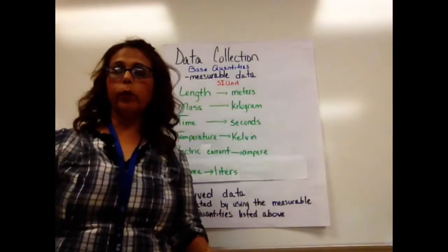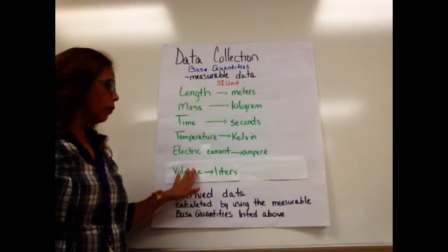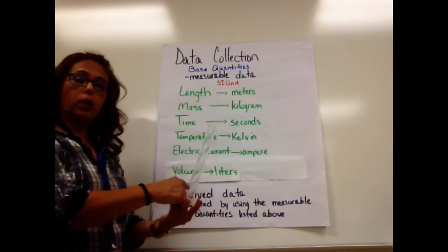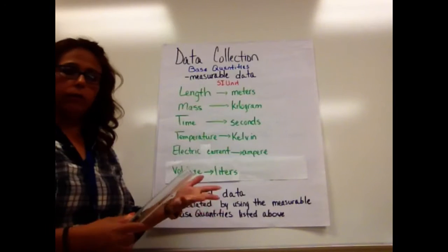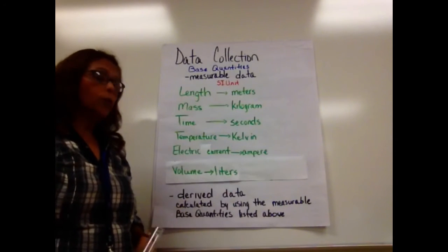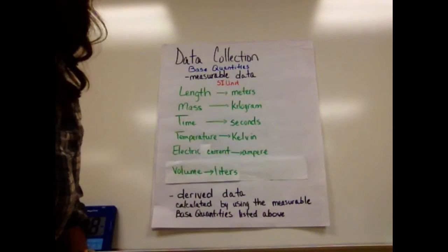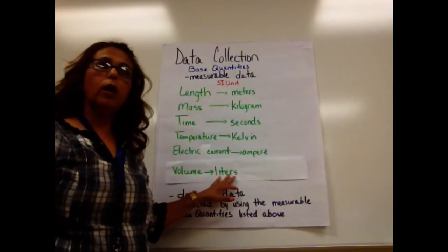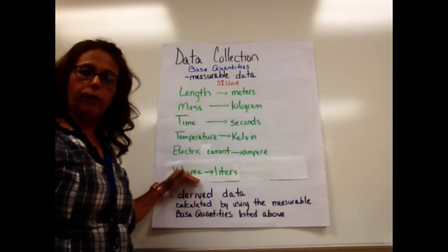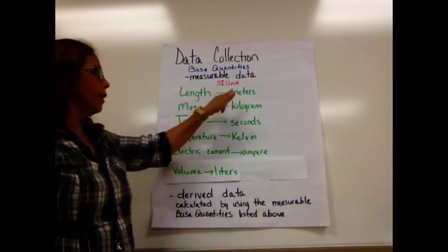Then we have volume, which is something we'll be using a lot more here in the first semester. Volume is measuring how much space something takes up. Typically when we're talking about volume, we're talking about liquids, and we'd use a graduated cylinder. It has the markings — that's why it's graduated. When measuring volume of liquids, we measure in liters and the graduated cylinder gives you that reading. We can also measure the volume of a solid like a cube by using lengths and calculating — centimeters cubed, meters cubed — to determine the volume.